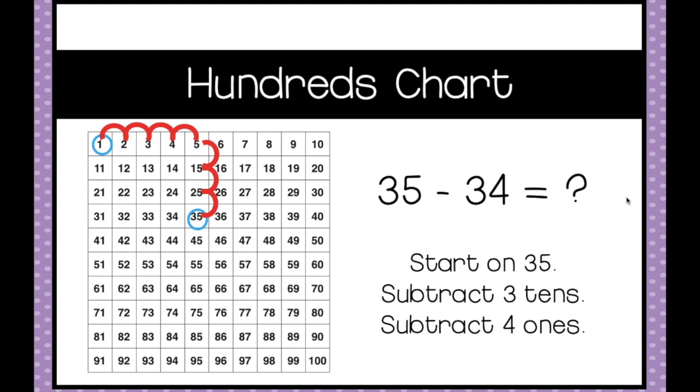In this example, 35 minus 34, we're going to start on 35 and then the 34 has tens and it has ones. So we're going to start subtracting the tens. There are 3 tens. Start on the 35, subtract 3 tens. 1, 2, 3.